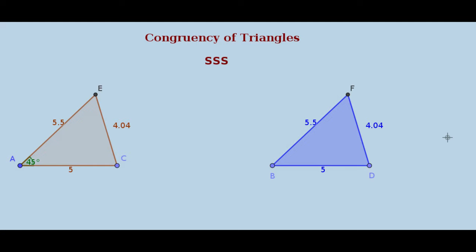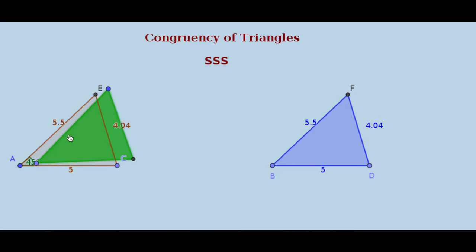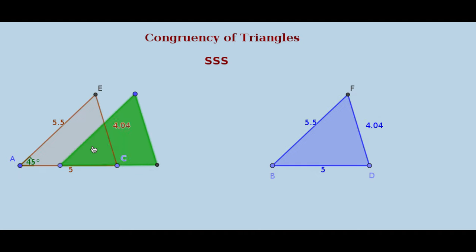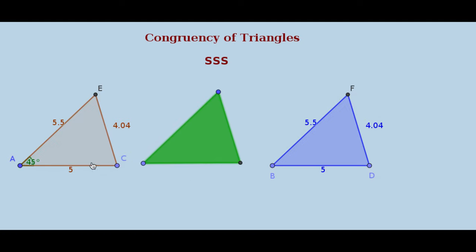Now, let us see the congruency of triangles. Consider these two triangles. If we see these two triangles, they appear to be of different size and shape. If I rotate this triangle, flip it, and shift it such that it superimposes with the other — you may observe that the two triangles are superimposing.